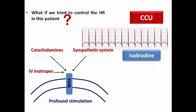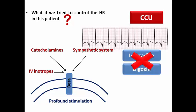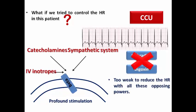What about ivabradine? It acts on the funny channels in the SA node without affecting the blood pressure. However, it is also wrong to give ivabradine in this state, and this also applies to digoxin. They are too weak to reduce the heart rate against all these opposing forces of catecholamines, the sympathetic system, and IV inotropes. Beta receptors would not respond to any control of heart rate via an indirect mechanism.